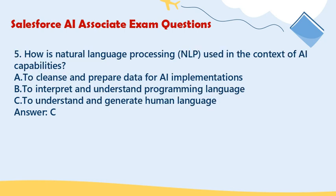Question 5: How is natural language processing (NLP) used in the context of AI capabilities? A. To cleanse and prepare data for AI implementations. B. To interpret and understand programming language. C. To understand and generate human language. Answer: C.